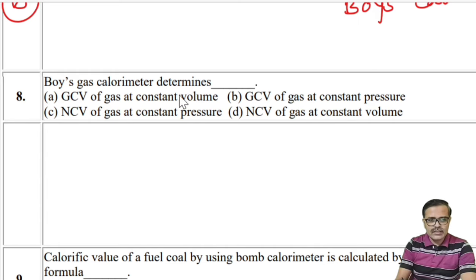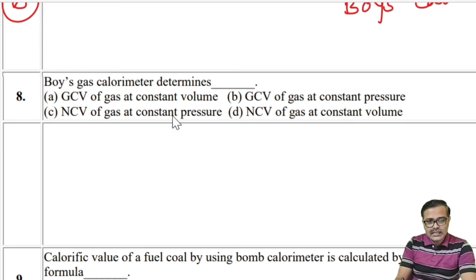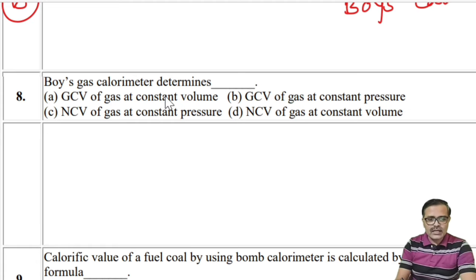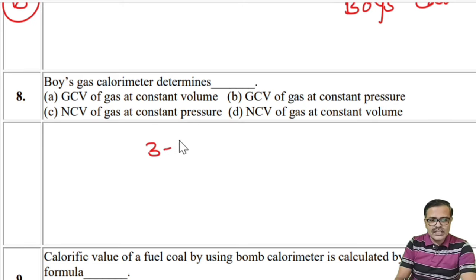The Boys gas calorimeter determines GCV at constant pressure, because we maintain a uniform pressure of gas at 3 to 4 liters per minute — that means it operates at constant pressure. So the Boys gas calorimeter determines GCV at constant pressure.